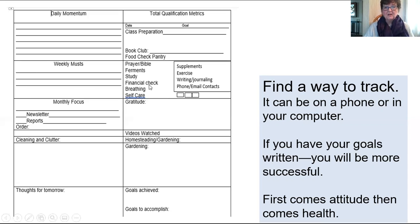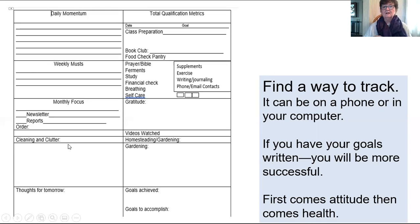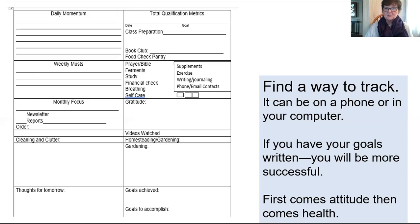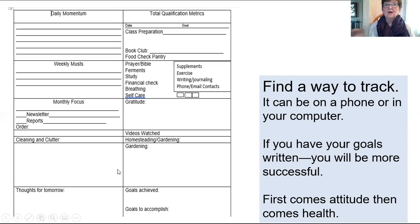I have contacts to make, so I put in some checkboxes — my goal is to have three contacts every single day. Then I list things I want to accomplish that day, what I want to accomplish this week, my monthly focus on cleaning and clutter. Every day I want to spend at least 15 minutes, sometimes 45, on cleaning up clutter. I love homesteading and gardening. If I watch too many videos on that, I do a little self-talk and say you need more action.